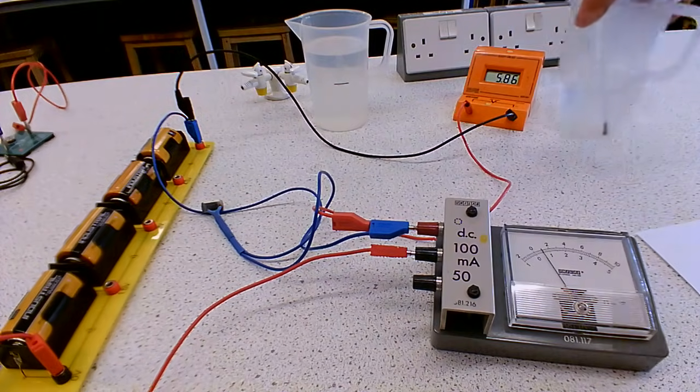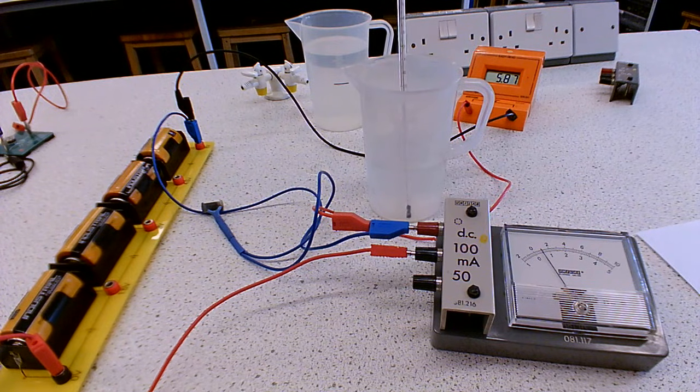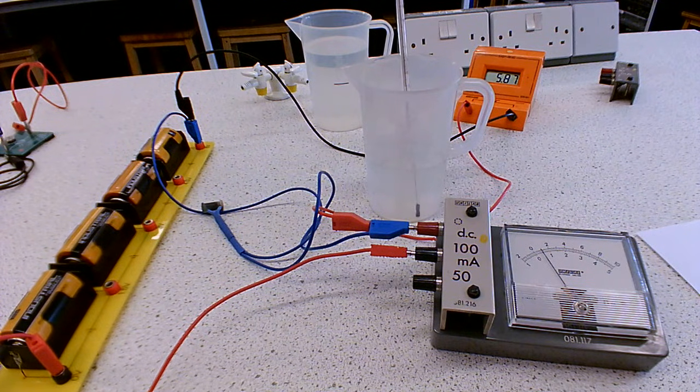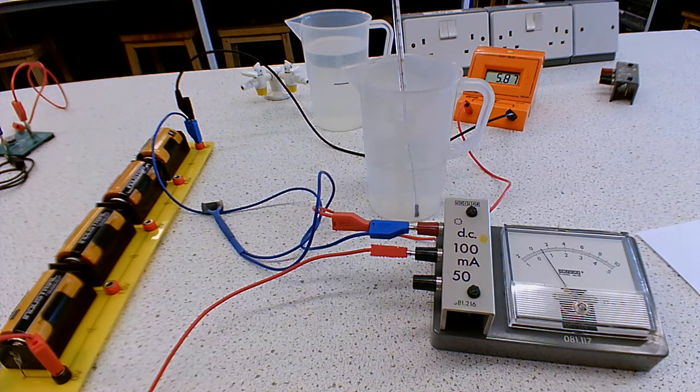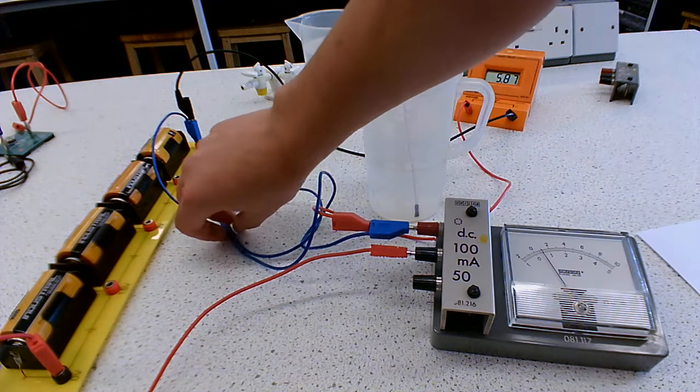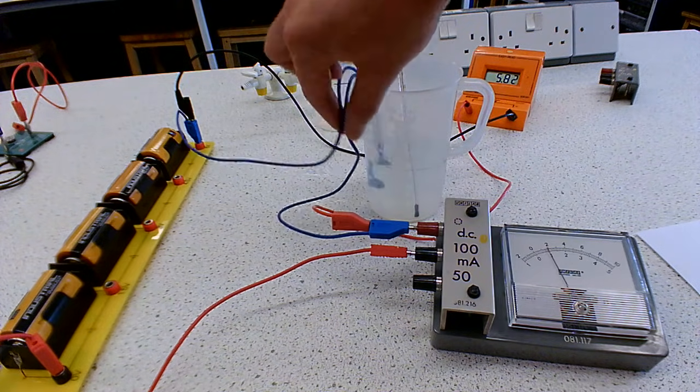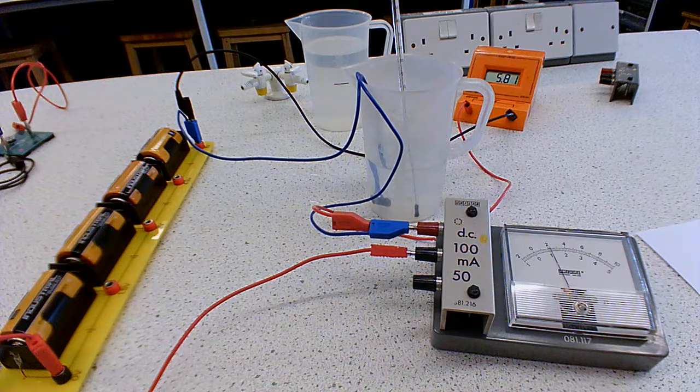So what we've got here is in this jug, I put water that's come from a kettle. I've given it time to settle down, this is at 80 degrees Celsius currently. Normally we wouldn't have circuitry anywhere near water, but this is a special waterproof component, so I can actually stick that in there.